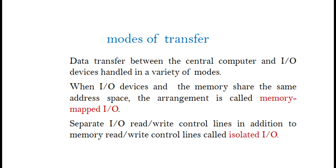Modes of Transfer: Data transfer between the central computer and I/O device is handled in a variety of modes. When I/O devices and memory share the same address space, the arrangement is called Memory Mapped I/O. A separate I/O with additional Read/Write control lines (in addition to Memory Read/Write control lines) is called Isolated I/O.